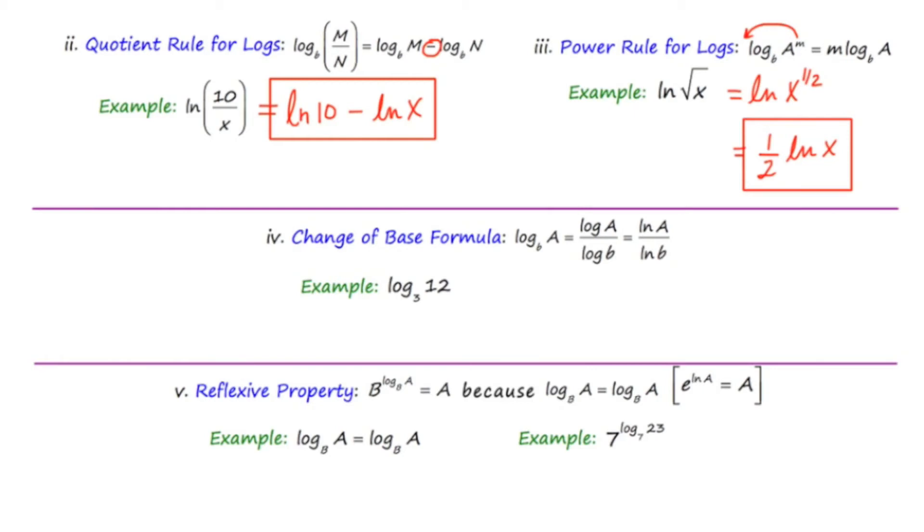Okay, moving to property number four, the change of base formula. If you are evaluating log a base b and it's not one that you could schwing and do in your head, you can use your calculator and do the log of a over the log of b or the natural log of a over the natural log of b. And a mnemonic that I tell my students is that remember when you're using the change of base formula that the base goes in the basement. So notice our base b here in either case ends up in the denominator.